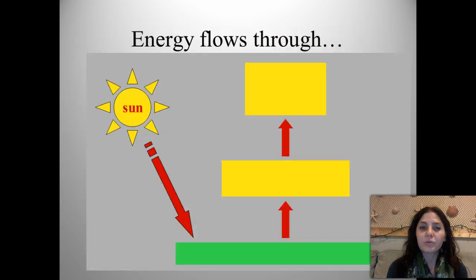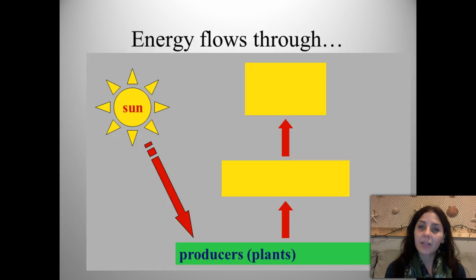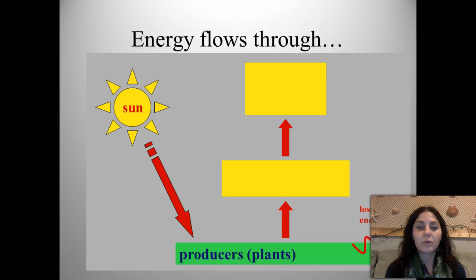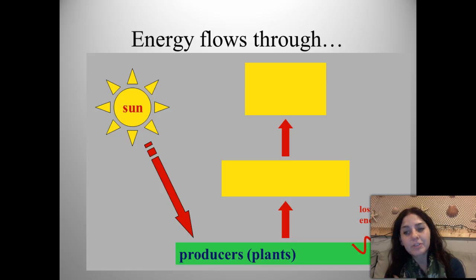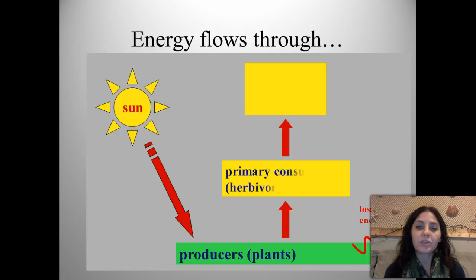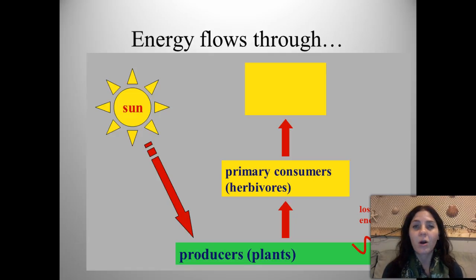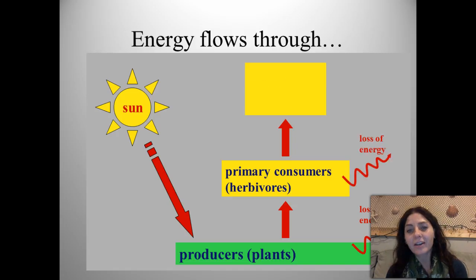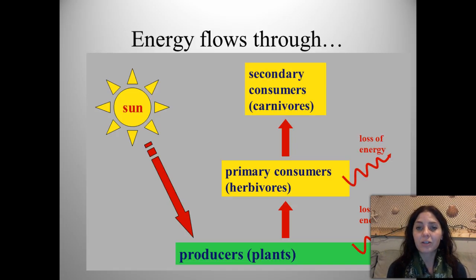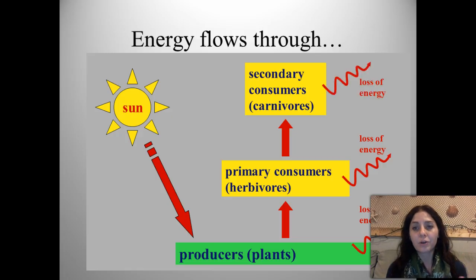Energy flows through our ecosystem in levels. We start out with our primary producers, or our plants, which have gotten their energy from the sun. 90% of that energy is lost, so only 10% gets passed up to the primary consumers, or the herbivores. Only 10% of that gets transferred up to the secondary consumers, or carnivores, and so on and so forth.